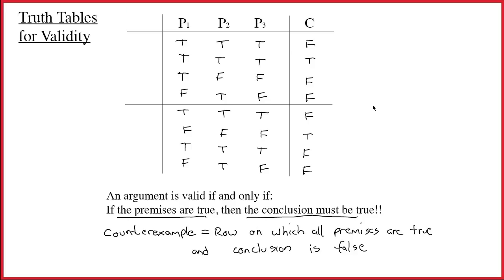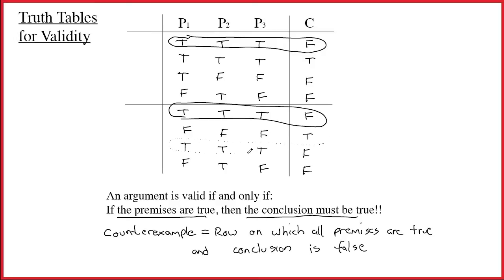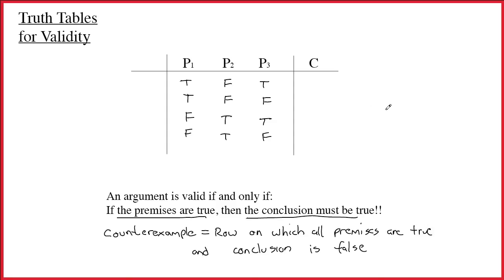One more example: in this case, there are several counterexamples — on row one, row five, and row seven. You can have lots of counterexamples. That doesn't necessarily make the argument more invalid; you're either valid or invalid. Validity doesn't generally come in degrees.